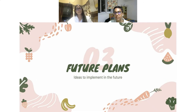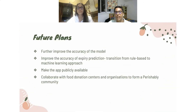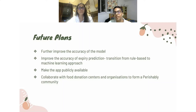Our future plans: we plan to further improve the accuracy of the model and the expiry prediction. Currently we're using a rule-based layer, so we plan to transition to a machine learning approach, which will be more accurate. We can make the app publicly available on the Google Play Store and the App Store, and we can collaborate with food donation centers and organizations to build a Perishabli community.